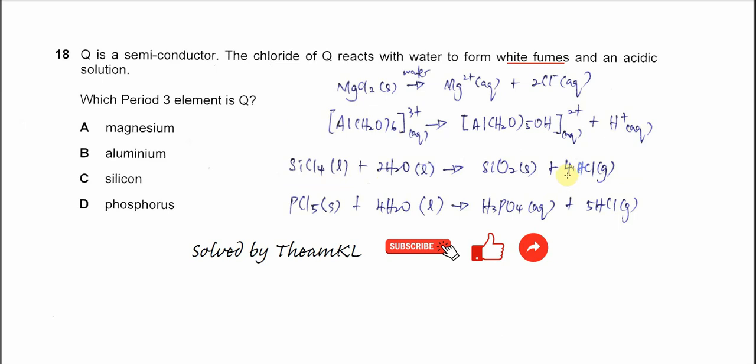And of course it will produce white precipitates. For PCl5, it will react with water to form phosphoric acid and HCl gas, which is still white fumes. So the answer must be C.